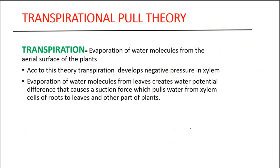Now let us study about the transpirational pull theory. This is a special type of theory which explains how water and food are transported in plants. The name suggests that the pull or suction is created especially due to the transpiration process. Transpiration is simply the evaporation of water molecules from the aerial surface of the plant due to high temperature outside. According to this theory, a negative pressure is created in the xylem, due to which water molecules move upward.